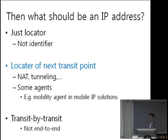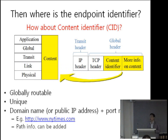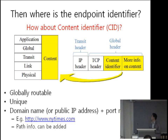The IP address should be the locator not of the endpoint, but of the next transit point — like a NAT box, tunneling endpoints, or mobility agents in mobile IP solutions. This is a kind of transit-by-transit model, as opposed to the legacy end-to-end principle. Then where is the endpoint identifier? I'd like to propose using some kind of content identifier, inserted somewhere in the packet. IP address indicates the previous and next transit point, and the final destination is indicated by this content identifier.